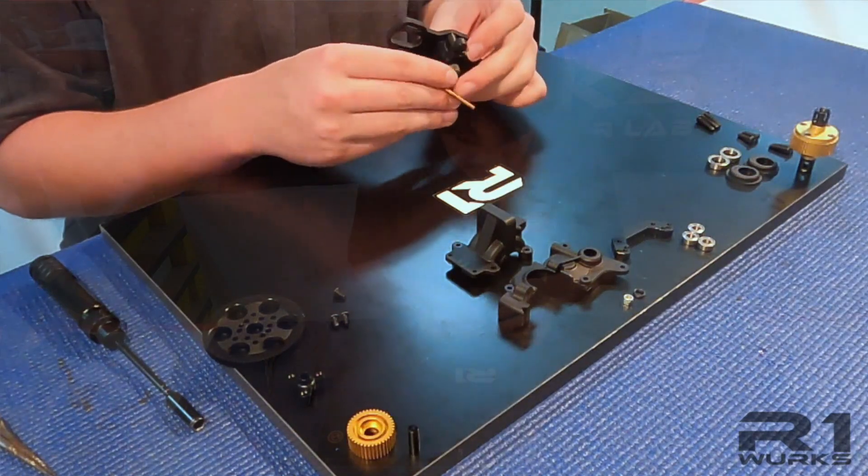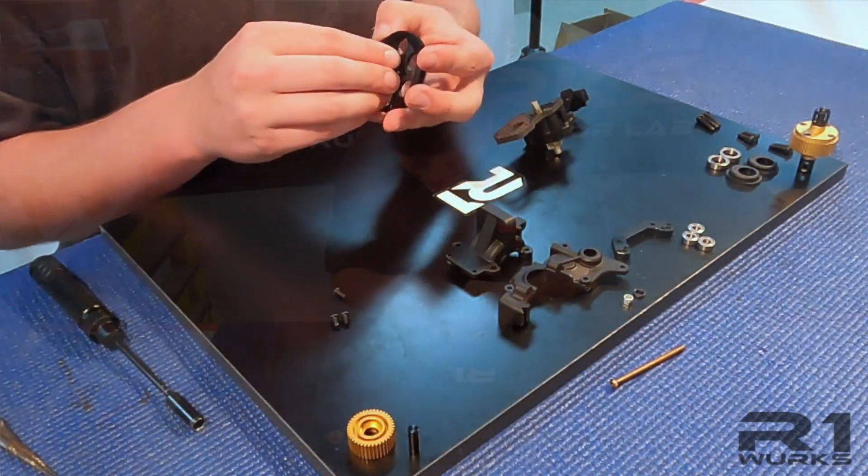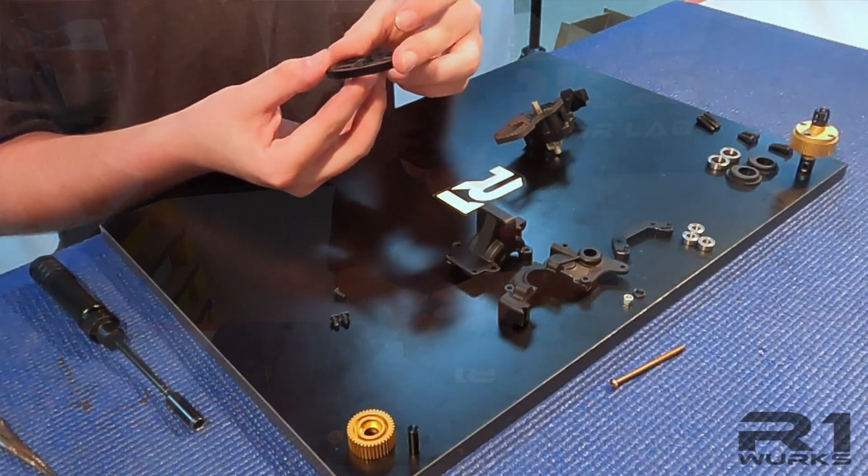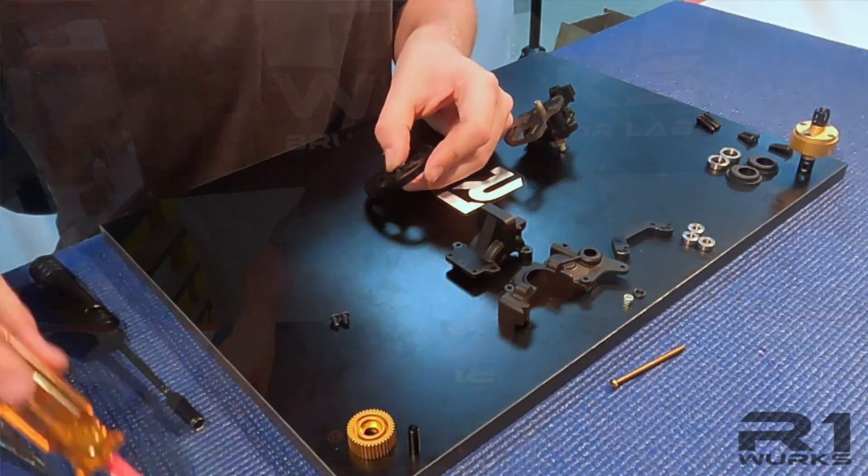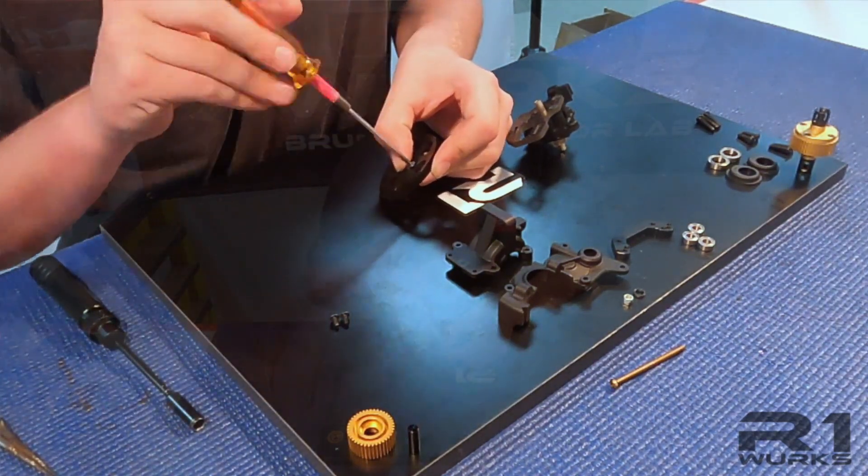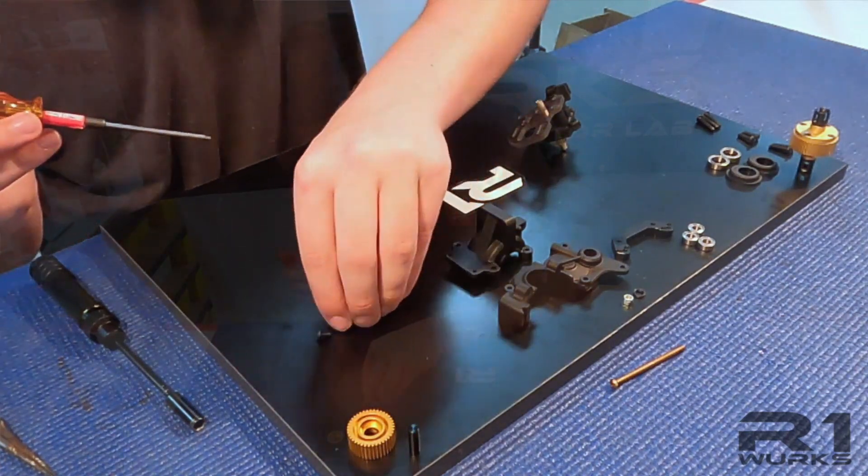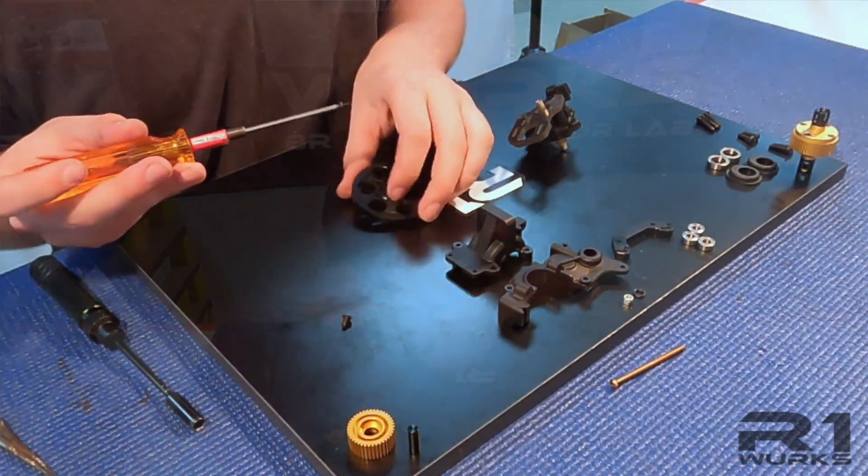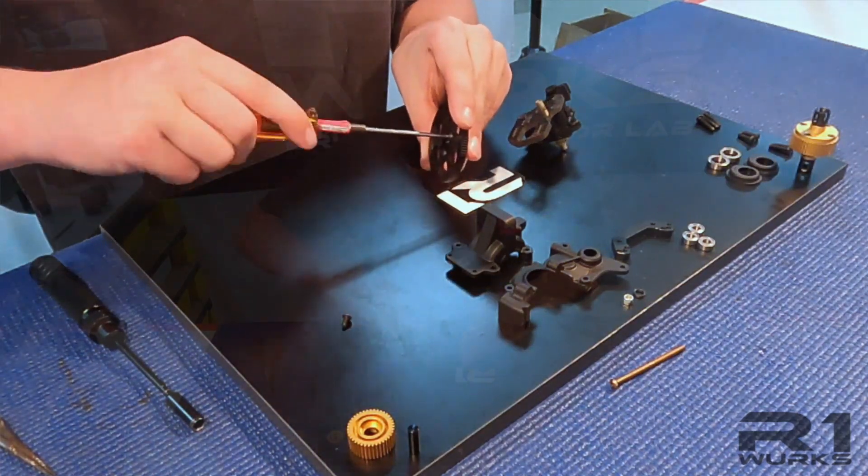And then we are going to put the adapter for the spur gear. We are going to use these three six mil buttons to secure the spur gear on. Just like so.